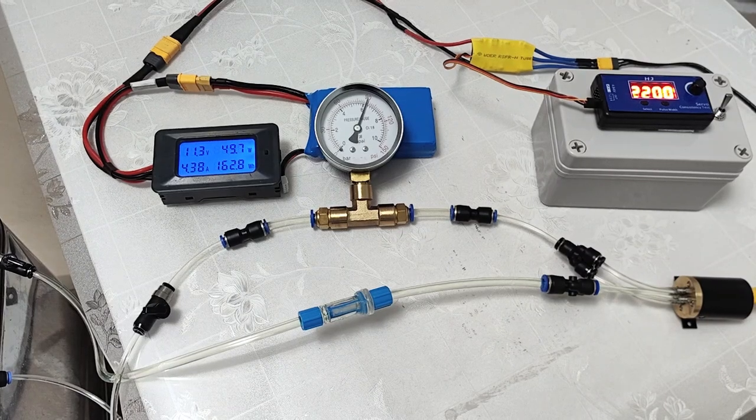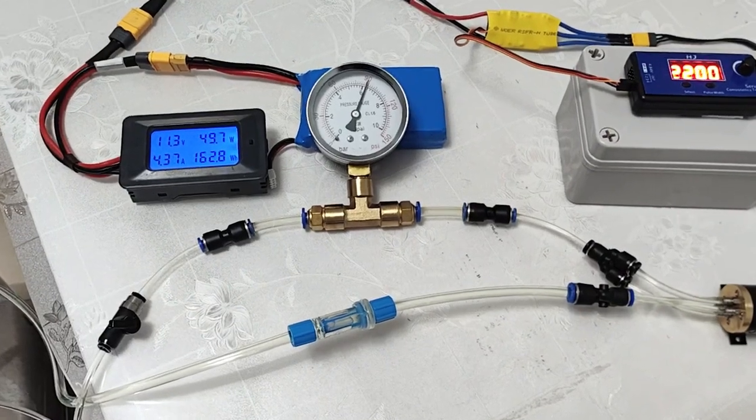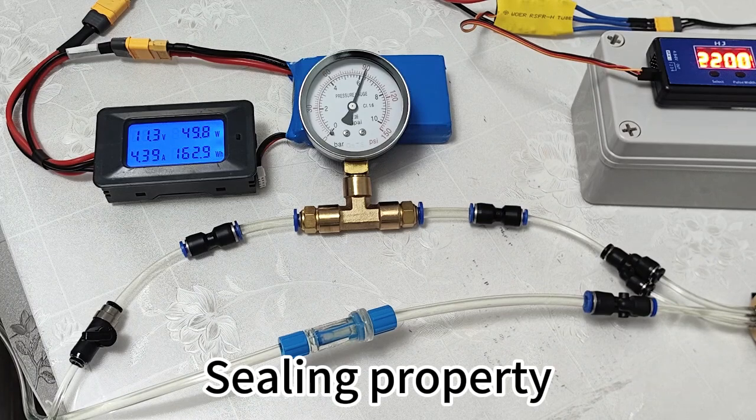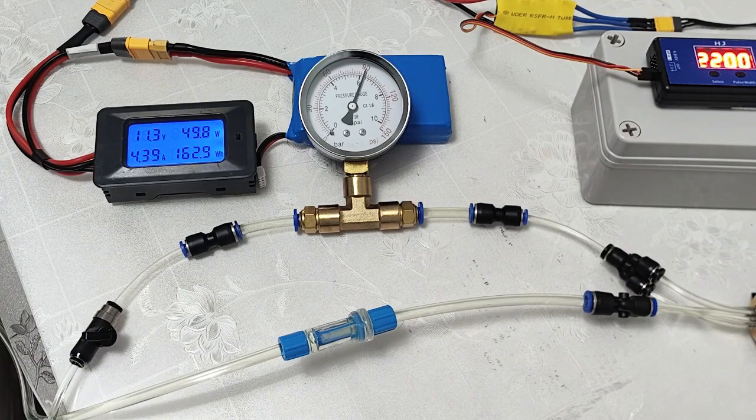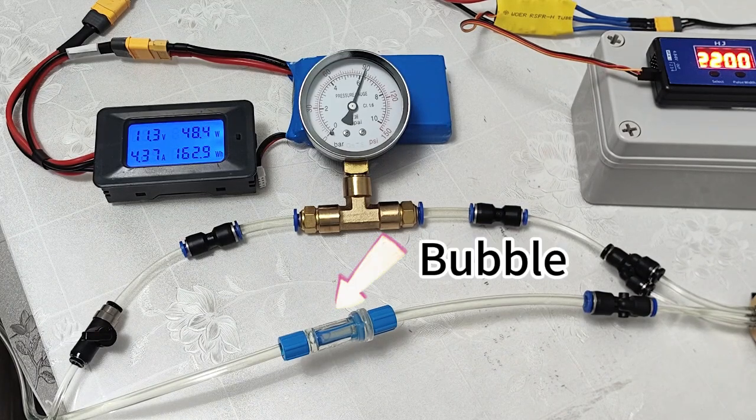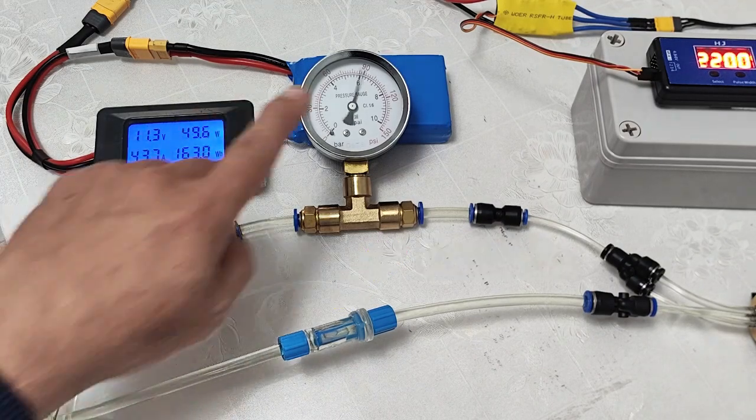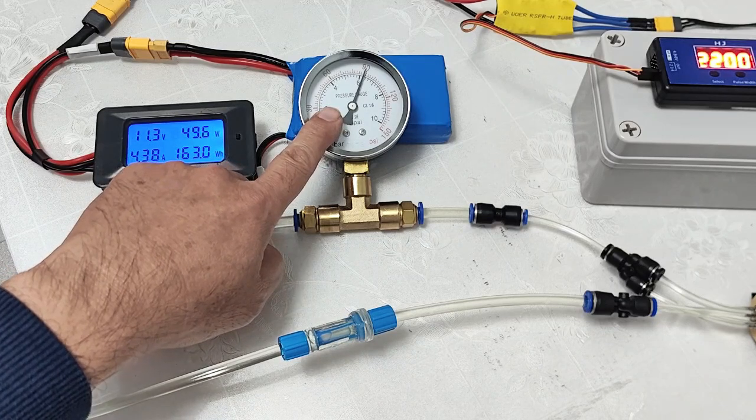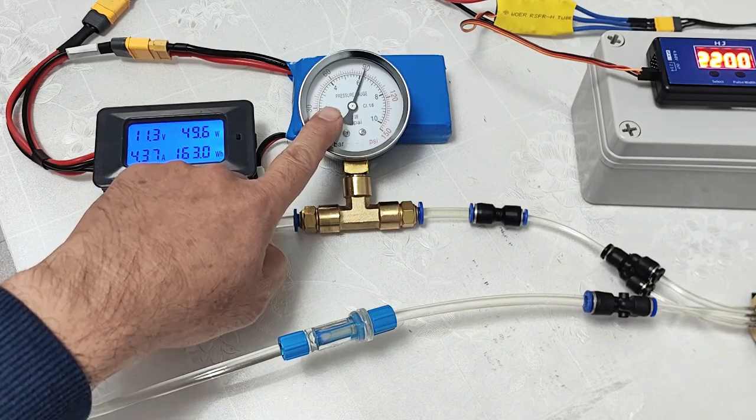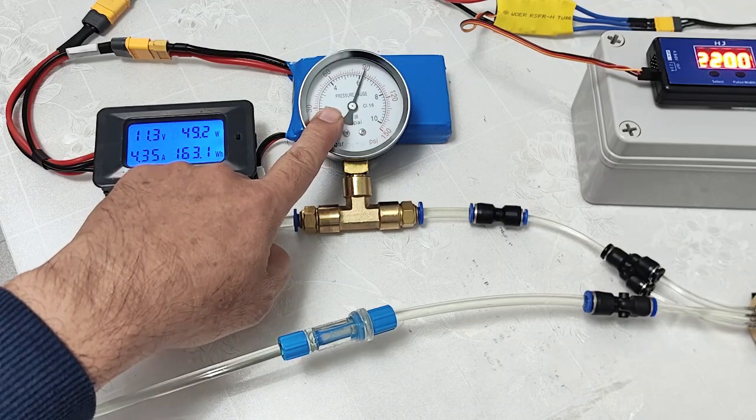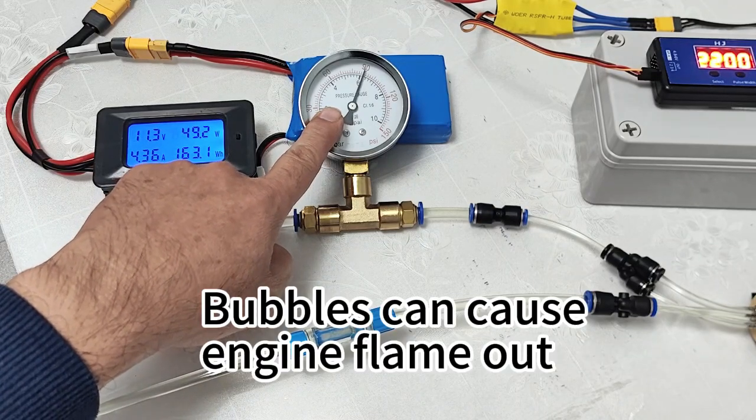When you finish all fuel tube connection, you must check the sealing property. In this video, it shows the sealing property not good enough. Small bubbles come in through the filter, through the pump and make the pressure change very quick and huge. It will cause engine flameout during running.